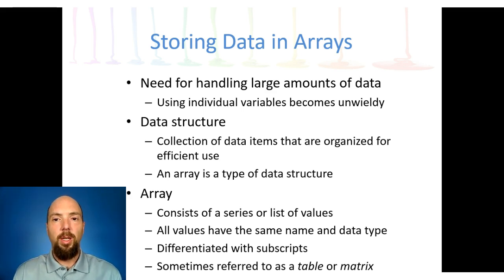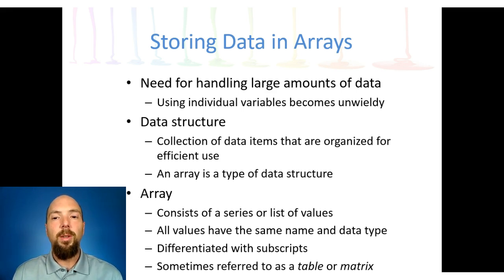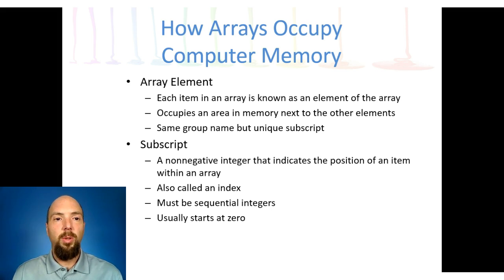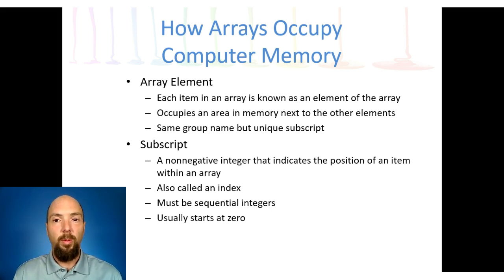An array is a collection of like data types — a collection of grades, names, book titles — they must be the same data type and somehow related to each other. We differentiate them through what's called a subscript; sometimes an array is referred to as a table or a matrix. Each value in an array is called an array element, identified by a subscript. Like a variable, each array element gets its own memory location — but in an array, we allocate a large chunk of memory and break it into pieces where each element gets its own chunk.